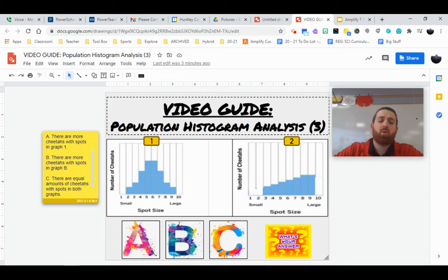So there are more cheetahs with spots in graph one. There are more cheetahs with spots in graph number two. That shouldn't say graph B, it should say two. And there are equal amounts of cheetahs with spots in both graphs.